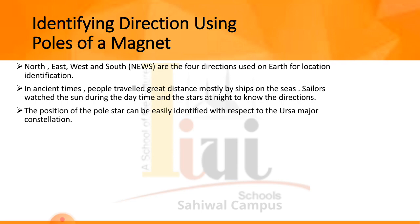The position of the pole star can be easily identified with respect to the Ursa Major constellation. Ursa is a Latin word meaning a big she-bear. Ursa Major means a big bear. Some star positions in the sky, when combined, give the shape of a bear — that is why it is called the Ursa Major constellation.